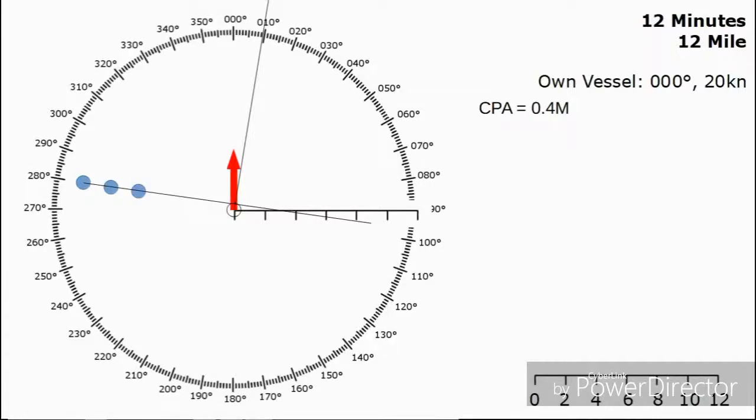We can then add another line perpendicular to the relative line of approach to give us the bearing at the CPA, which in this case is 009 degrees. Next thing we need is the time to the closest point of approach.